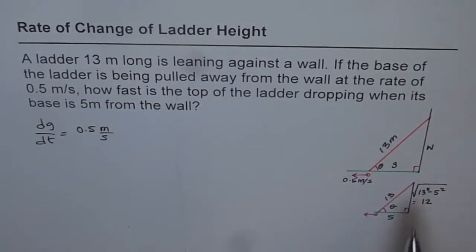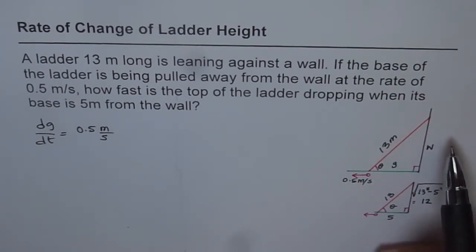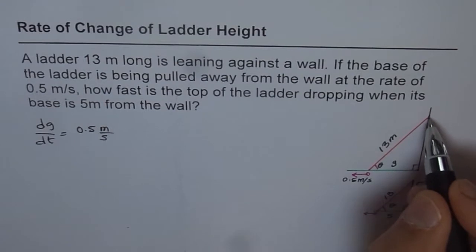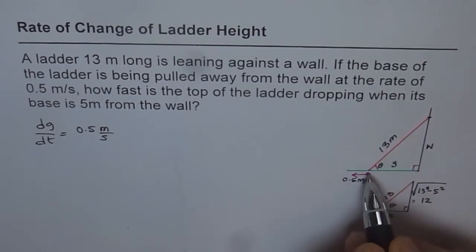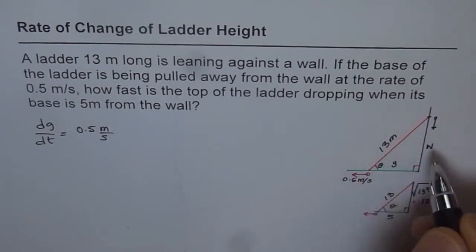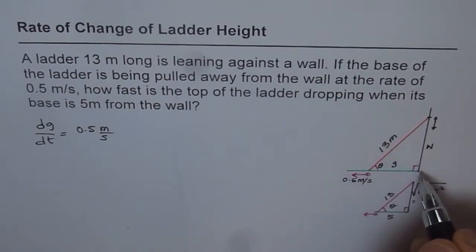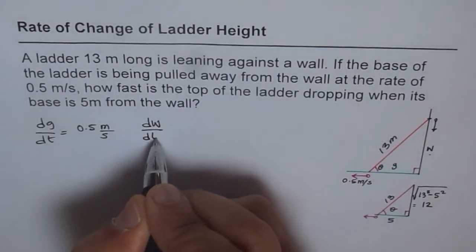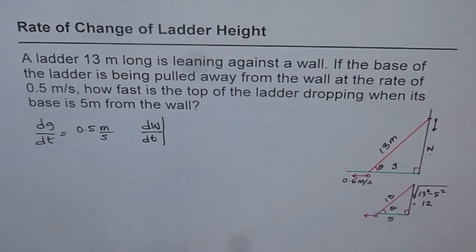What we need to find is the rate at which the top of the ladder is dropping down. This is the top of the ladder. As it slides, it drops down. We need to find the change in this height. This height is represented by the variable W, so we want to find dW with respect to time.